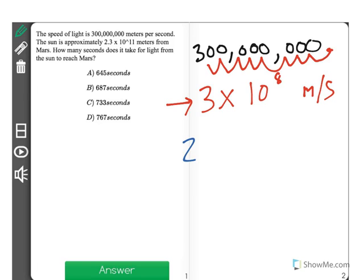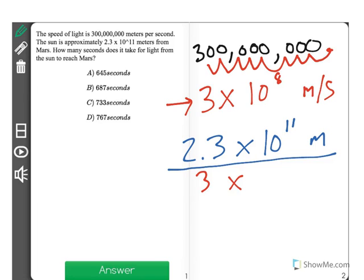Well, it also gives us the information that Mars is 2.3 times 10 to the 11th meters away. So what we need to do is take that distance and divide it by the speed of light, which was 3 times 10 to the 8th meters per second.